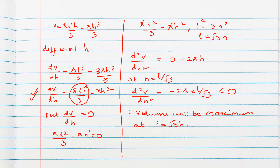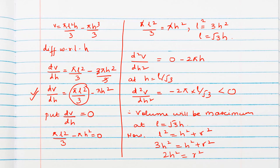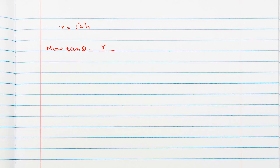Now we show the semi-vertical angle is tan inverse root 2. We know tan θ = r/h. Using l = √3 · h, we substitute into l² = h² + r²: so 3h² = h² + r², giving 2h² = r², meaning r = √2 · h. Therefore tan θ = r/h = √2 · h / h = √2. Therefore θ = tan⁻¹(√2).